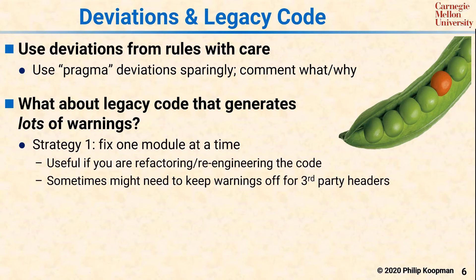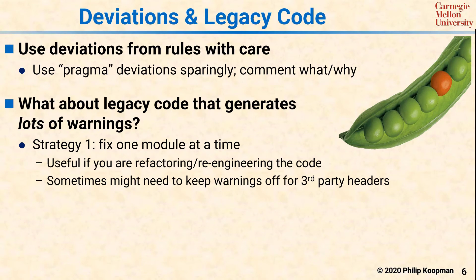Strategy one is to fix one module at a time to make the code compile clean for that one module with no warnings. This can be useful if you're doing refactoring or reengineering on a module-by-module basis. But note that you may need to keep warnings permanently off for third-party code modules if you only have headers and not source code.